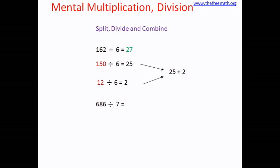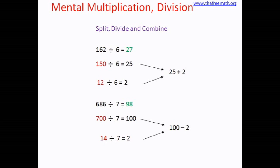Let's take one more example: divide 686 by 7. Think of a number divisible by 7 that is easy to work with — that is 700. So split 686 as 700 minus 14. Divide both by 7: the answers are 100 and 2. This time we subtract: 100 minus 2 equals 98. When splitting for division, be careful to consider the divisibility of the resulting numbers.